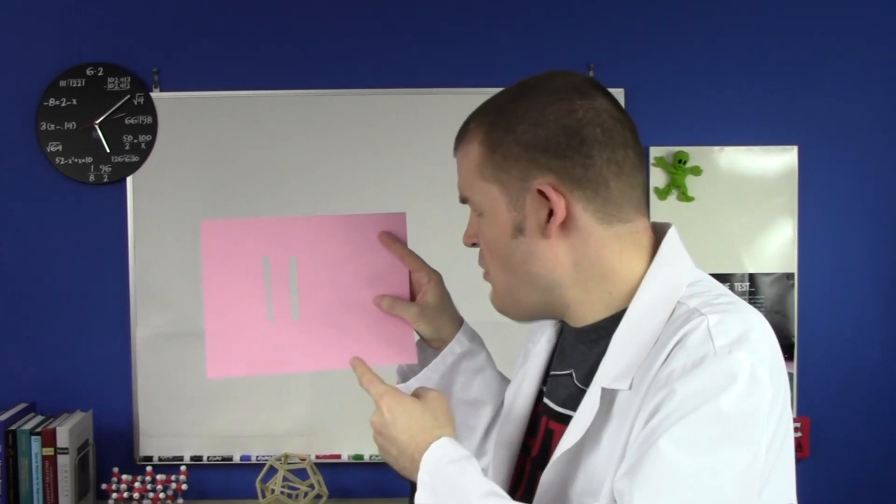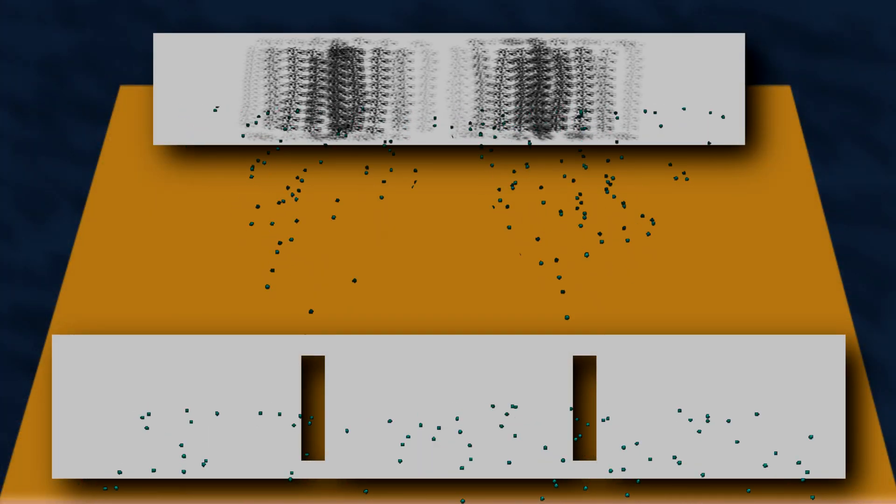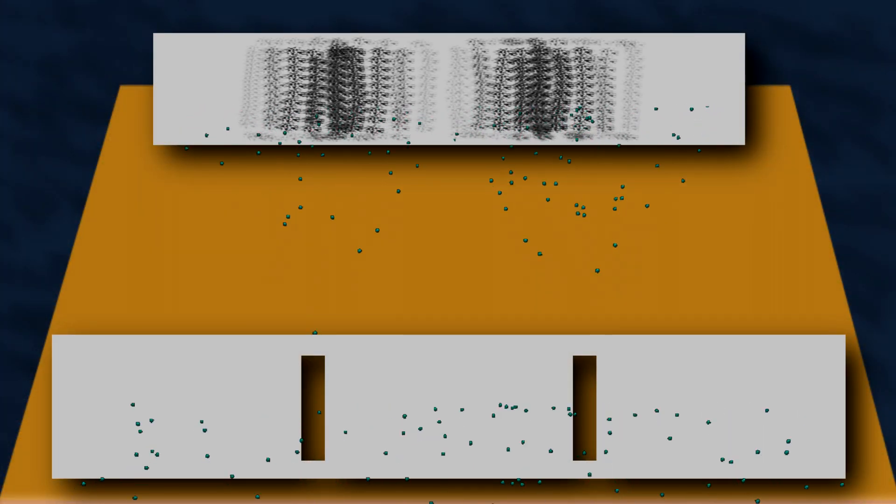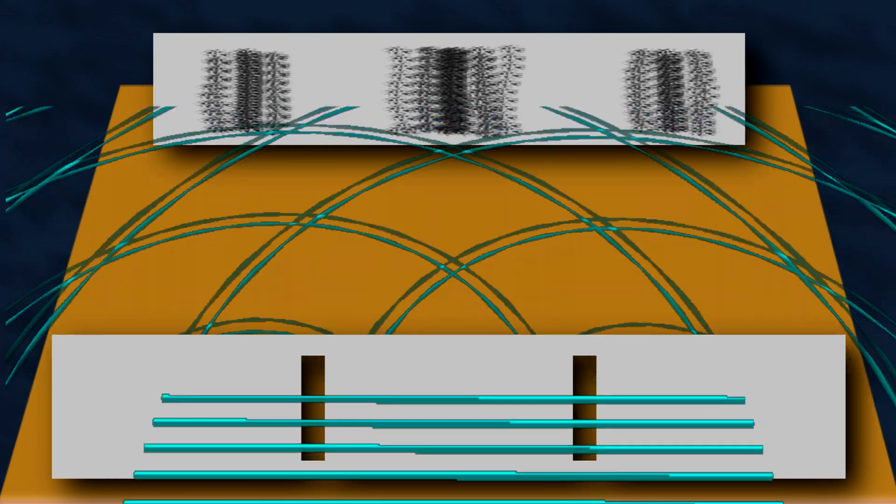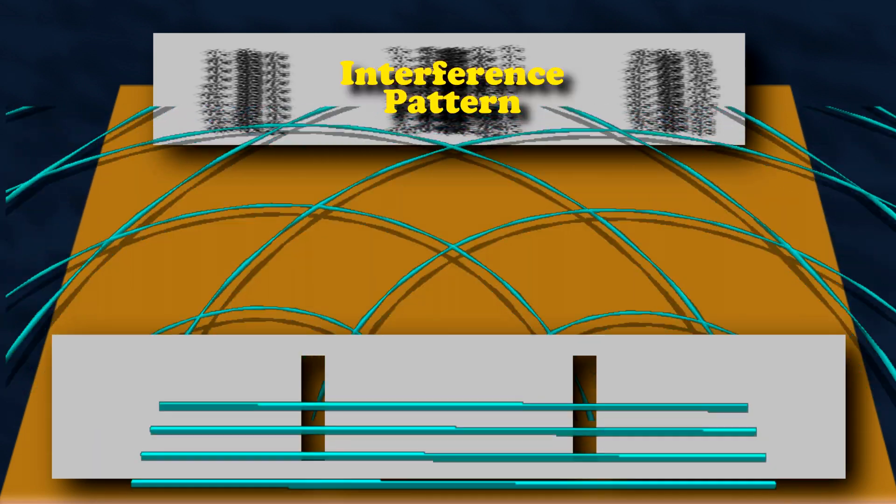This is a double-slit! See the two openings? Okay, so basically, if you launch a bunch of balls at something like this, they hit the wall on the other side in a pattern like this. If you launch waves at it, the pattern on the wall looks like this. And it's called an interference pattern. Thomas Young used this kind of experiment in 1801 to show that light was a wave.